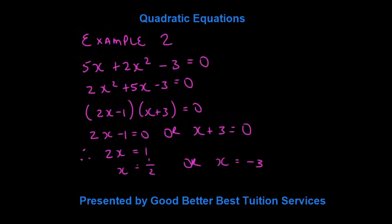Let's look at example 2. We have 5x plus 2x squared minus 3x is equal to 0. Now, what we want to do is write this in descending powers of x, so we write it in the form 2x squared plus 5x minus 3 is equal to 0.